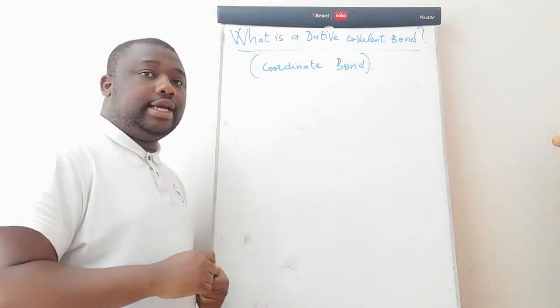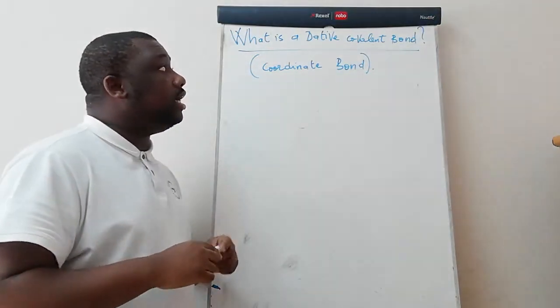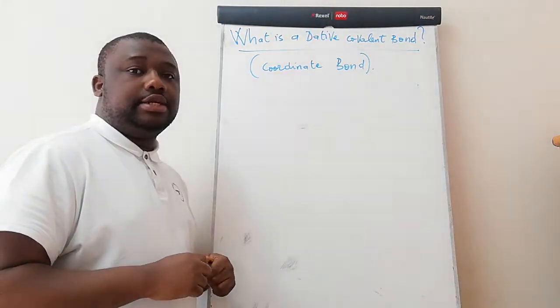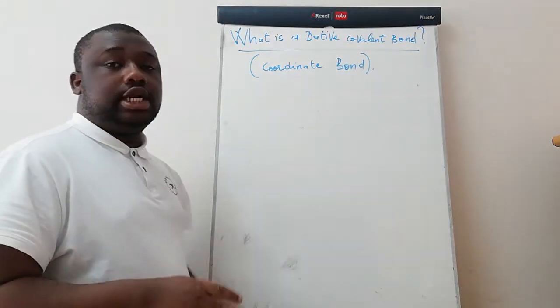Hey good people, today I'll tell you about what is a dative covalent bond. It's also called a coordinate bond.